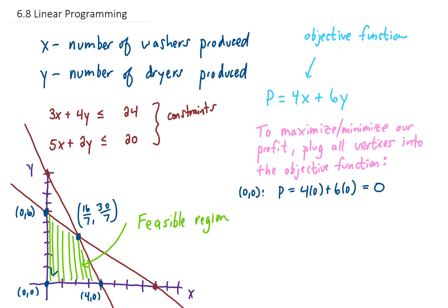What if we plug in the vertex (4, 0)? Well, our profit function would look like this. 4 times 4 would give us 16, 6 times 0 would give us 0, so our profit here would be $16.